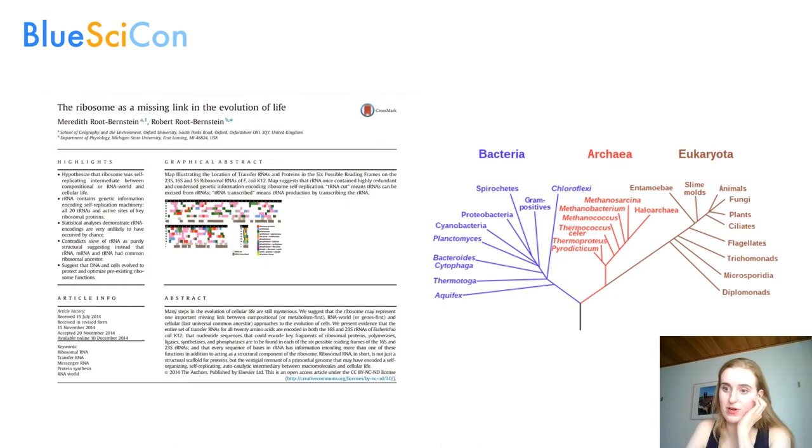The primary function of ribosomes is the production of proteins based on RNA matrices. Before our research, we had studied the topic and found a particular scientific publication which was the starting point of our work.